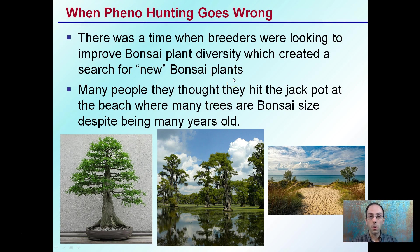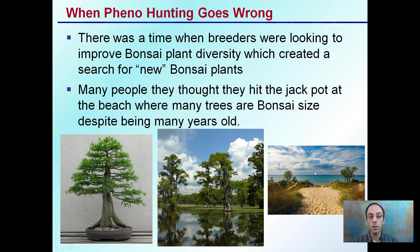So an example of when phenohunting goes wrong: there was a time when breeders were looking to improve bonsai plant diversity, and the search was on to find a new small dwarf plant for container gardening, for example. Many people thought they hit the jackpot when they went to the beach, because there were many trees that were bonsai-sized despite being very old. They determined they had a bunch of older tree species that were very small and would be very conducive to a container garden, since they don't want a tree that's going to grow full size.